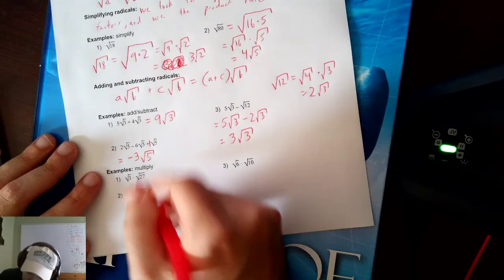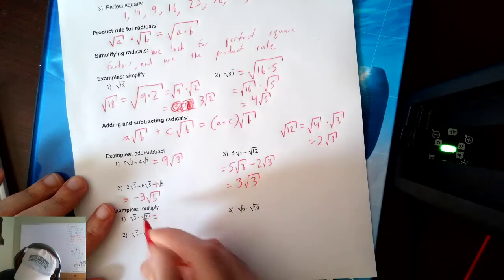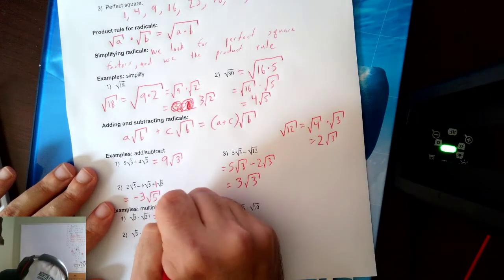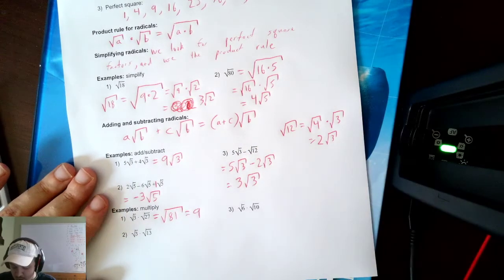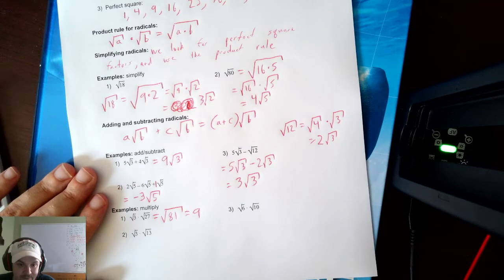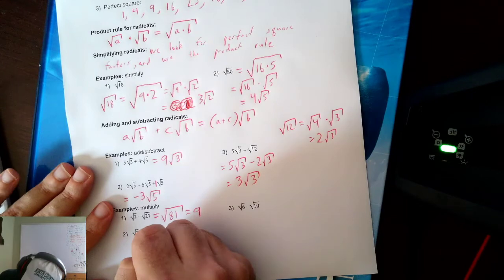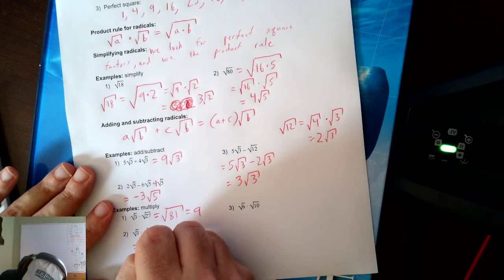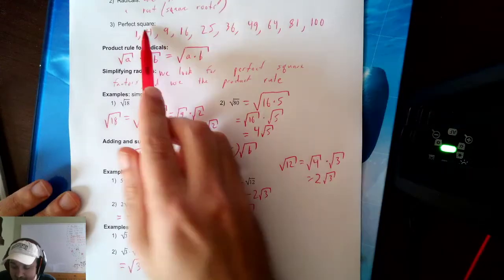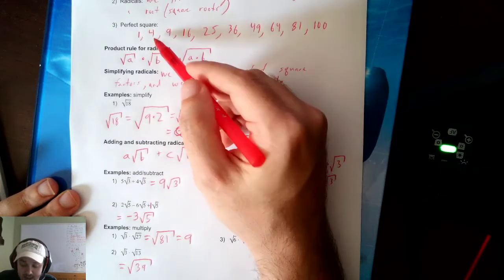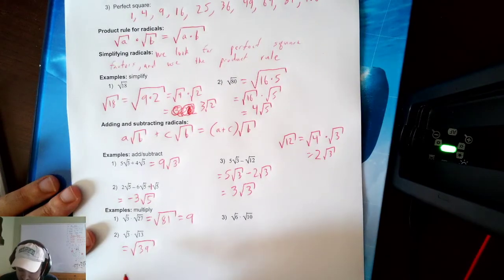Now, multiplying — we've already been using the product rule. What is square root of 3 times square root of 27? 3 times 27 is 81, and the square root of 81 is plain old 9. Square root of 3 times square root of 13 gives square root of 39. I should check if any perfect squares divide 39 — 4, 9, 16, 25, 36 — none of them do. So square root of 39 is fully reduced.